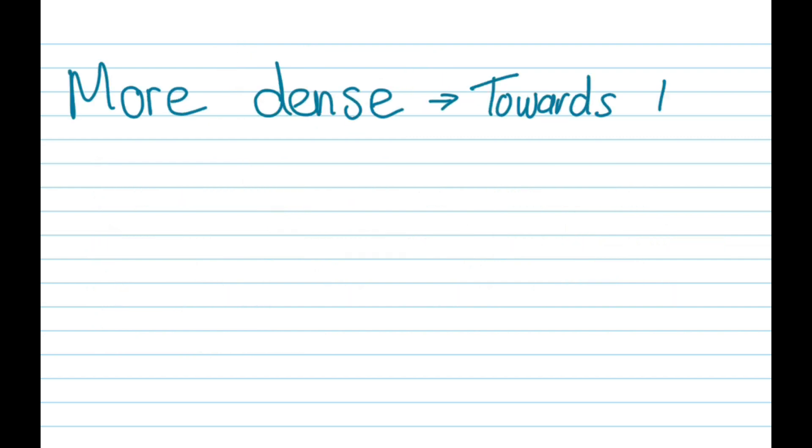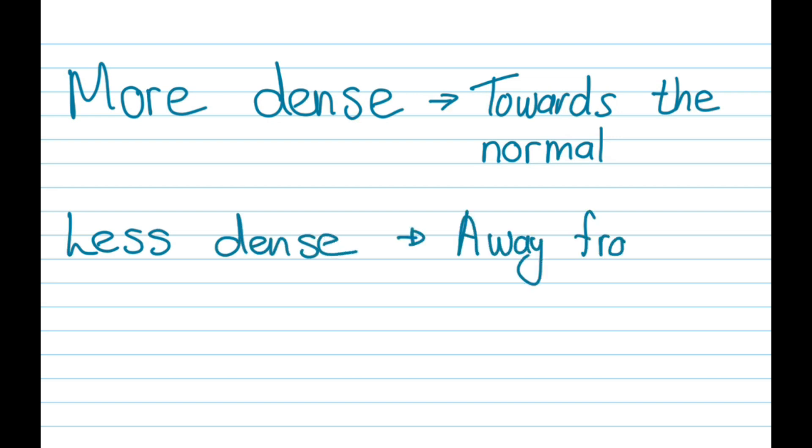When it comes to the mediums, we have to talk about the density. If you're going to move to a more dense medium, the ray is going to bend towards the normal. And if you have a less dense object that you are moving towards, it's going to move away from the normal.